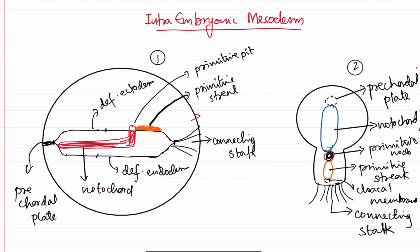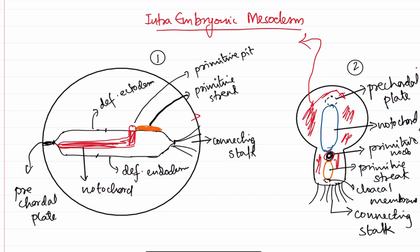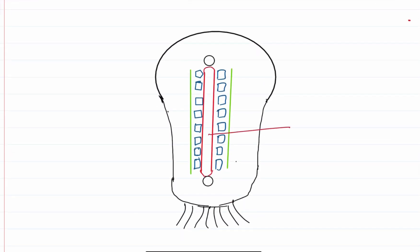Now the question is: where is the intraembryonic mesoderm? In the midline, we have the notochord. The remaining part — the part that I'm going to mark here in red color, all of these regions — is the intraembryonic mesoderm. So today, we'll be discussing what happens to the intraembryonic mesoderm and what are the derivatives of intraembryonic mesoderm. A longitudinal groove will develop on either side of the notochord and that will divide the intraembryonic mesoderm into three parts.